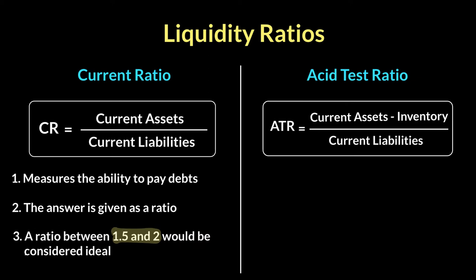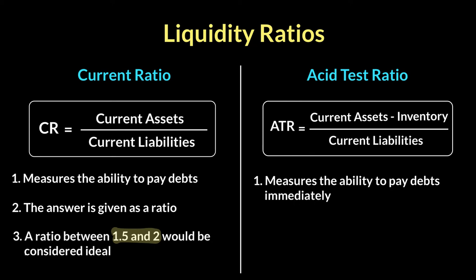The reason we deduct inventory from this formula is because inventory is an illiquid asset. It may still be in its raw material form, and by the time you finish it, sell it, and the money comes in, a lot of time may have passed and you may have needed the money sooner. Because of its illiquid nature, businesses remove inventory from the formula to get a truer reflection of what the liquidity currently is. This tells you if a company has the ability to pay debt immediately.